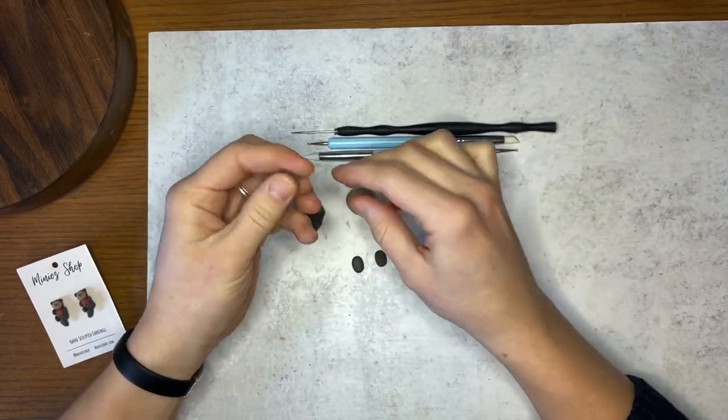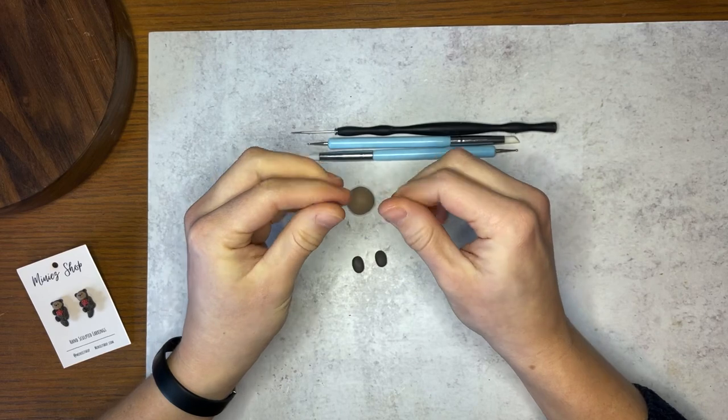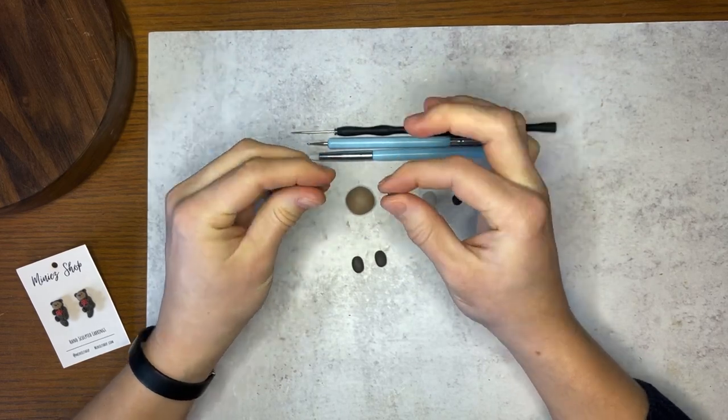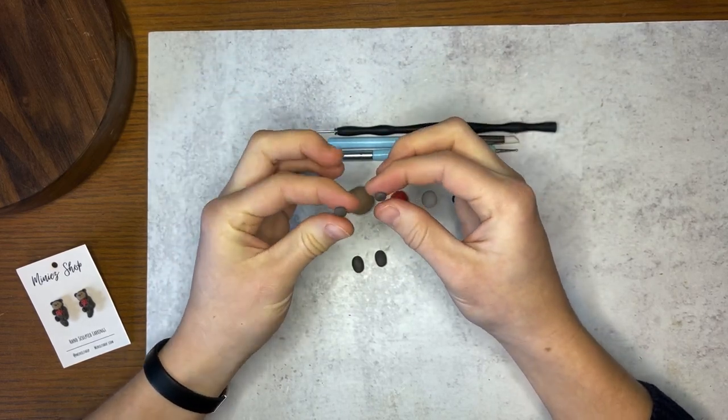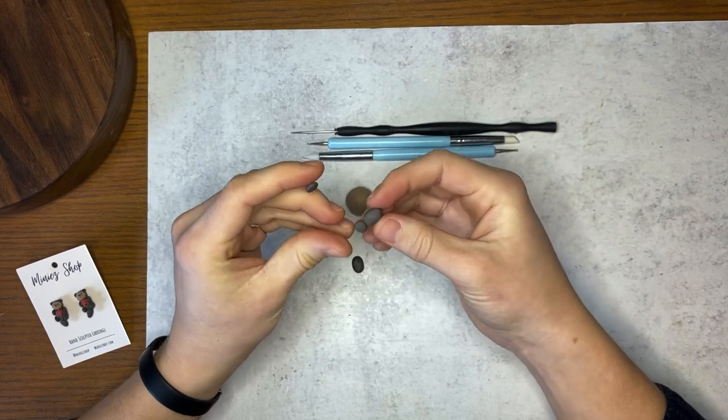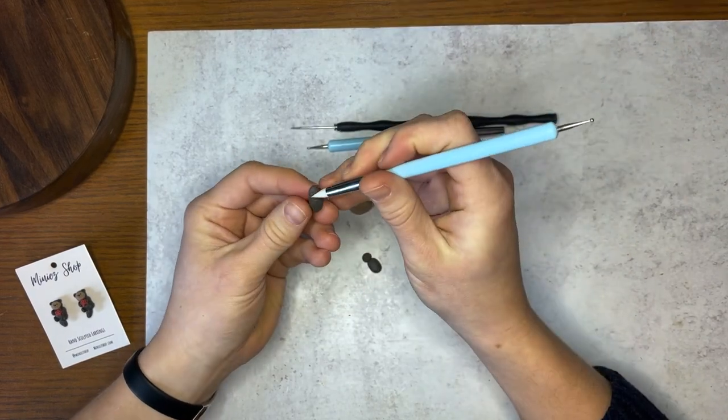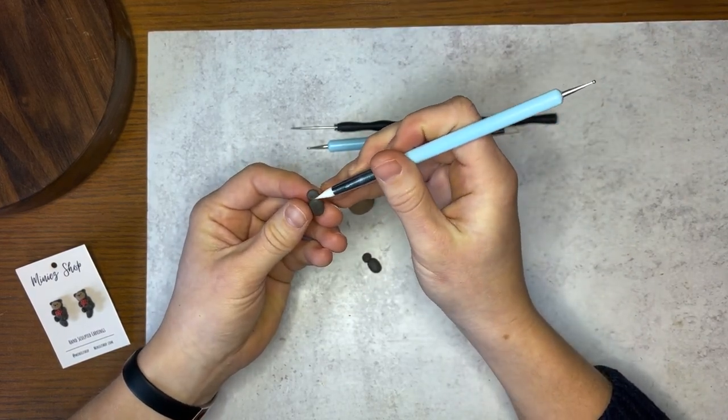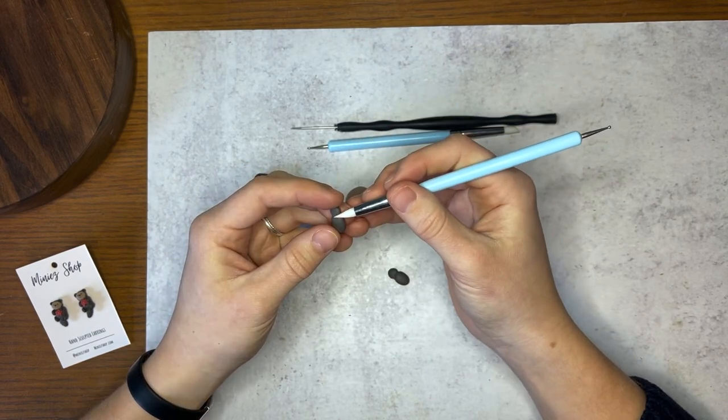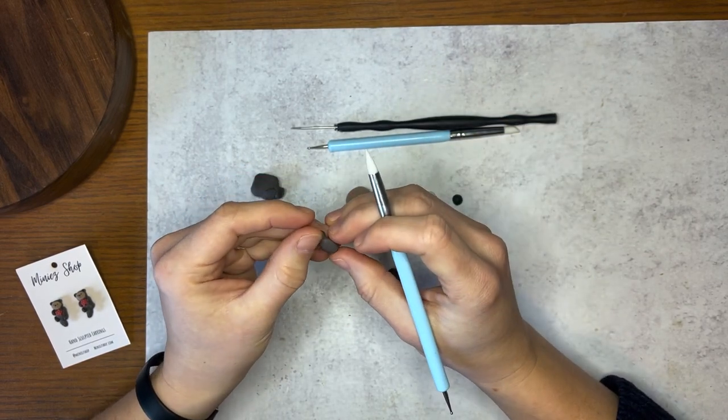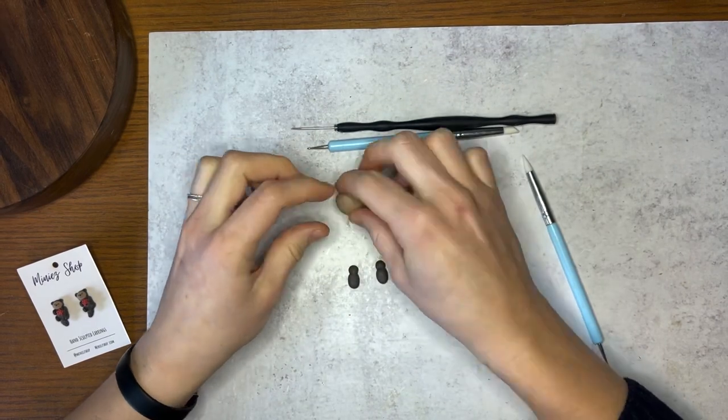Then take some more clay, about a quarter as much as we took for both of those, and we'll split it into two. Roll those into balls, and then press them flat. We'll size those up on the body, and on the other one. Once you have those on there, take your silicone dowel tool, and just smooth those seams together. You can tap those seams with your finger just to make them nice and smooth.